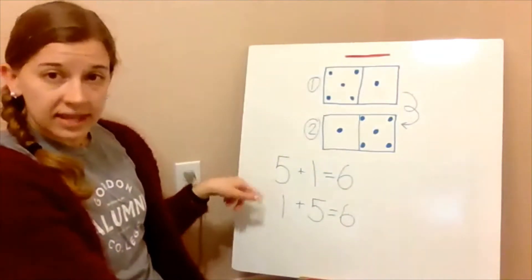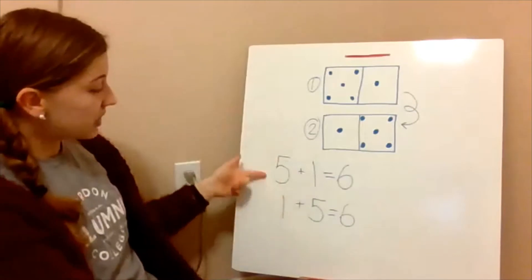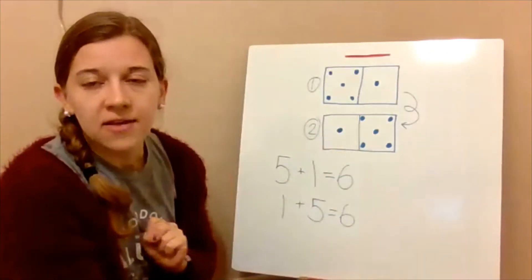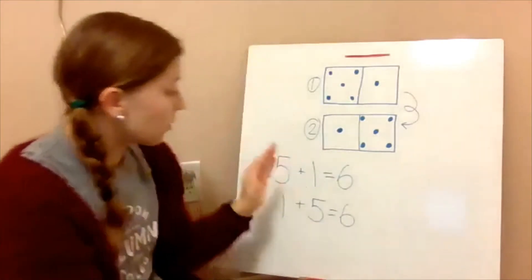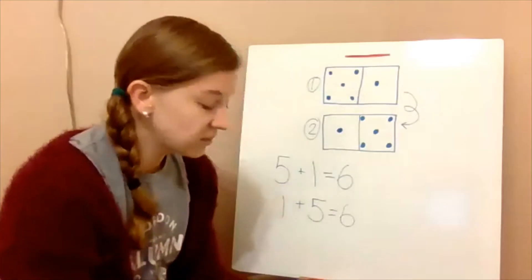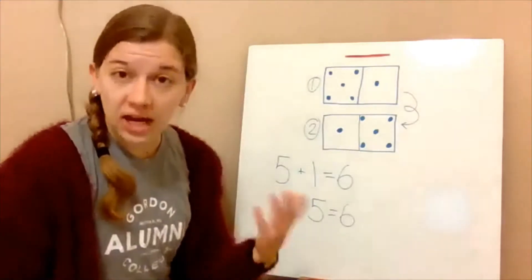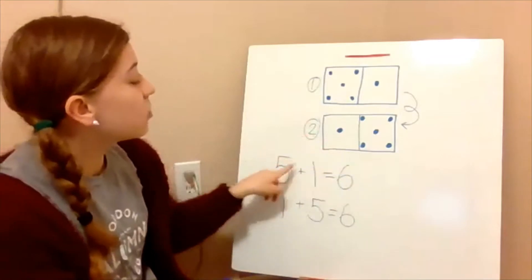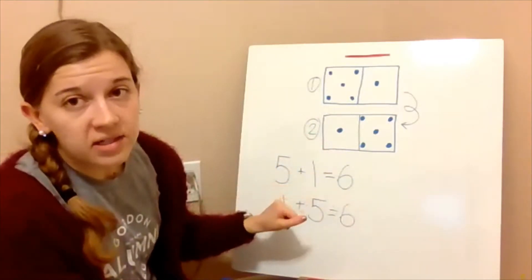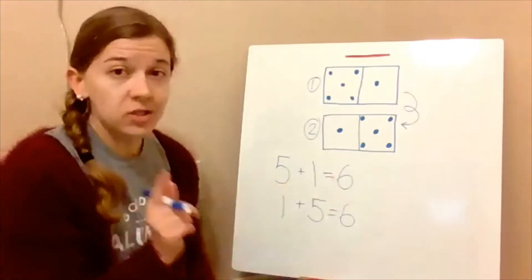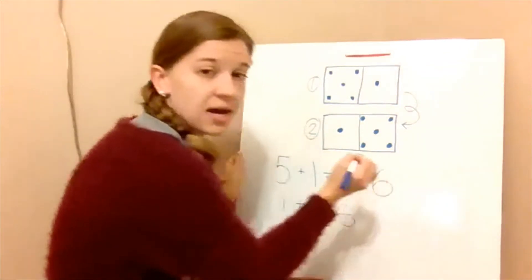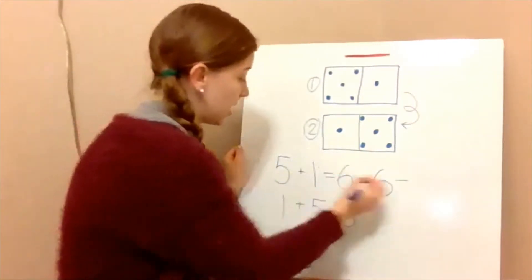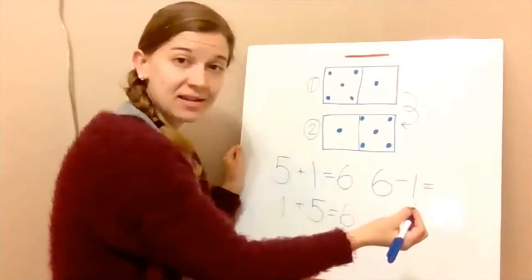Are these related addition facts? Yes, because they have all the same numbers. Now we're going to look at these addition facts and come up with the related subtraction facts — they have to have all the same numbers. It's like checking with subtracting. So if we have five plus one equals six, we would start off with six — the largest number. Then six take away one equals five.